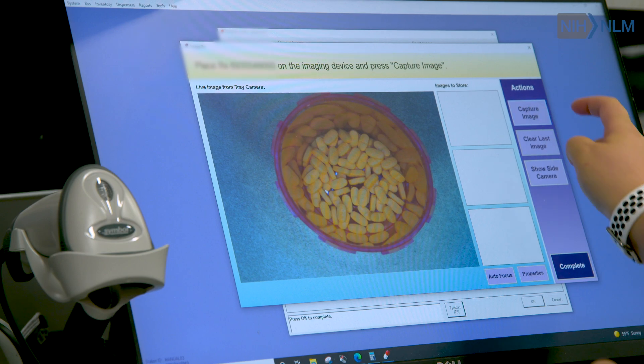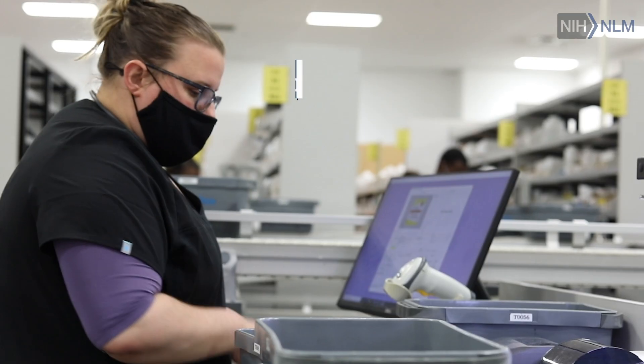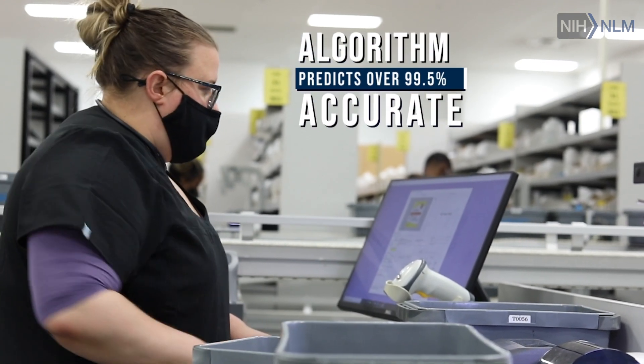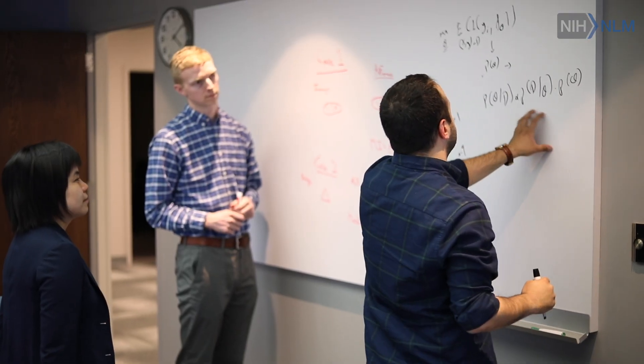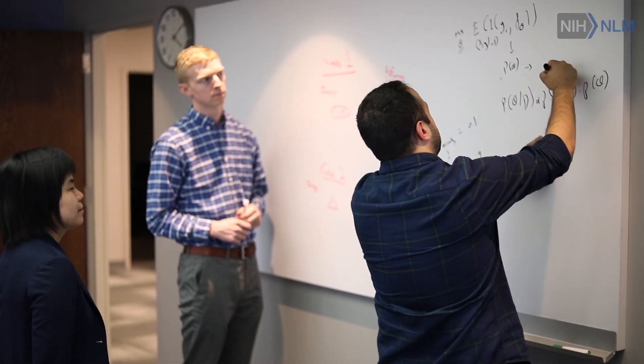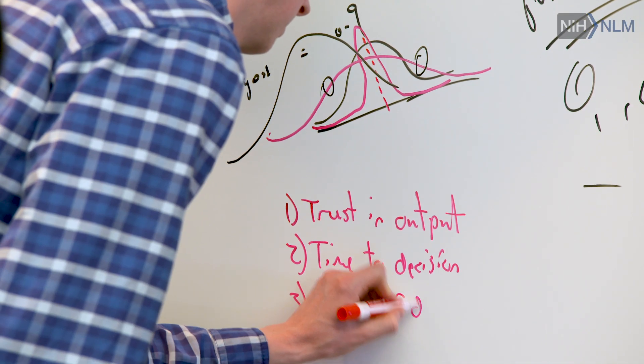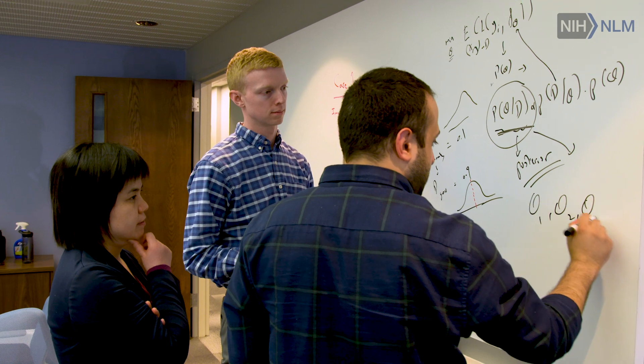The results were surprisingly positive and we found that our algorithm can predict with an accuracy above 99.5 percent. But one thing that we are afraid of — even those 0.5 percent of errors can be critical. Our hope is that in those cases where the algorithm is wrong, the algorithm can tell us that it is not confident in its results, so that at least the human can double-check.